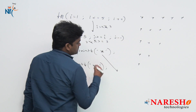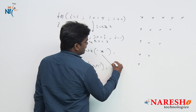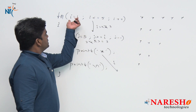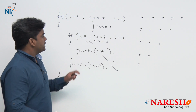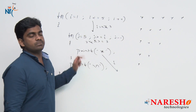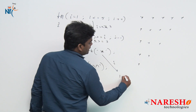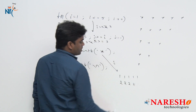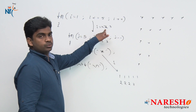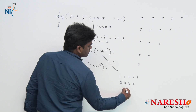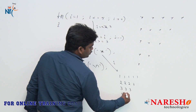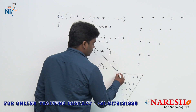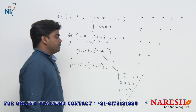Suppose instead of a star I am printing the i value — what is the output? In the first iteration i equals to 1, the inner for loop repeats 5 times, so it prints 1 five times. Next i value is 2, it prints 2 four times. Next i value 3, it prints 3 three times. Then 2 times of 4 and 1 time of 5.